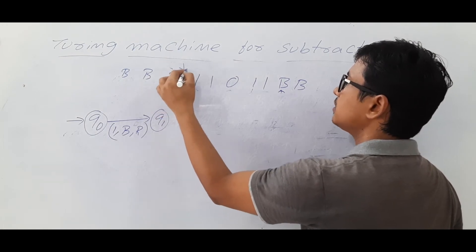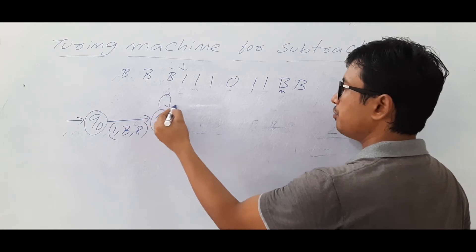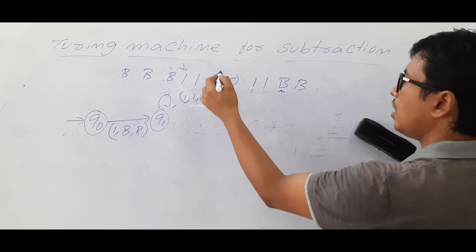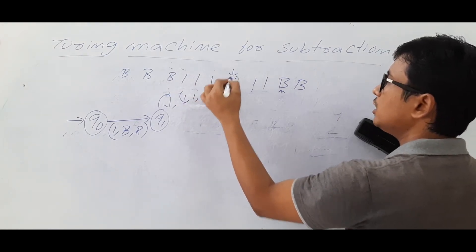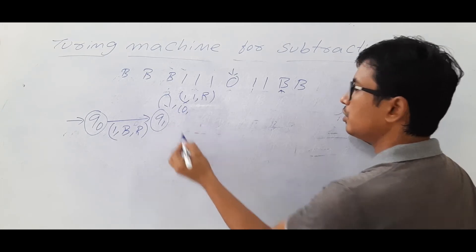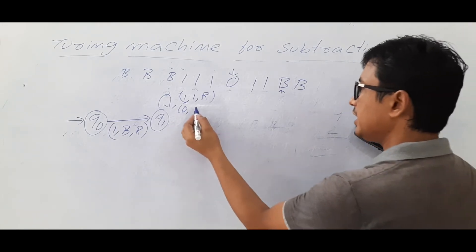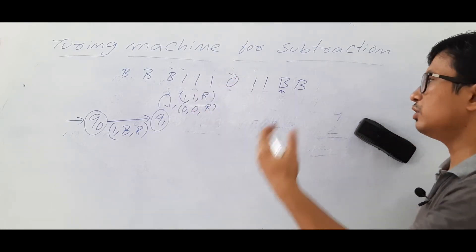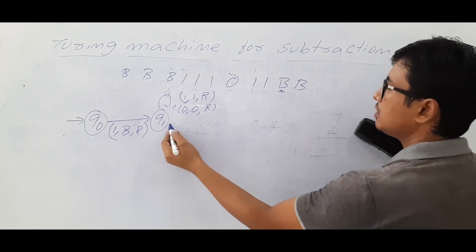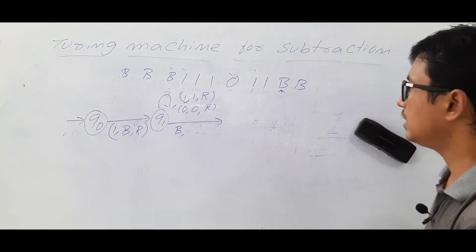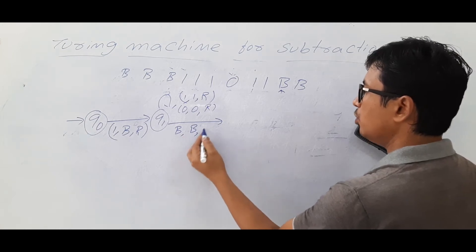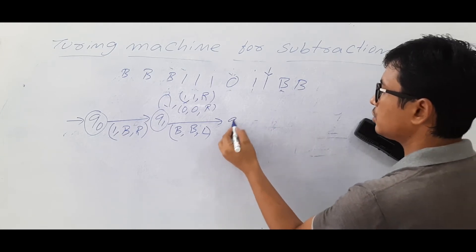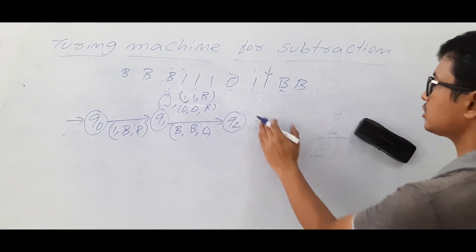In state q0, if I see a 1, I make it a blank, move to the right, and reach state q1. Now in state q1, any number of 1s I keep as 1 and keep moving right. When I reach a 0, I keep it as 0 and move right. I continue until I get a blank, keep it as a blank, and move to the left — reaching state q2.